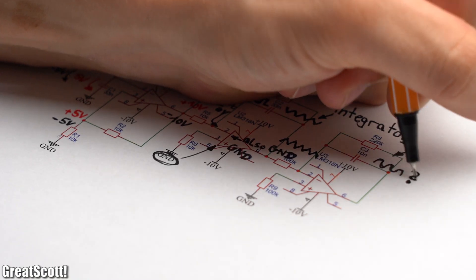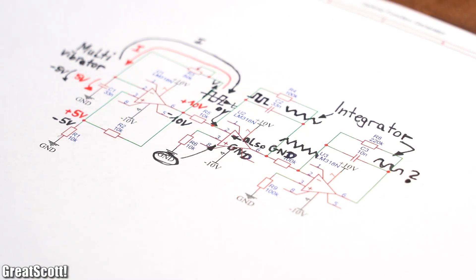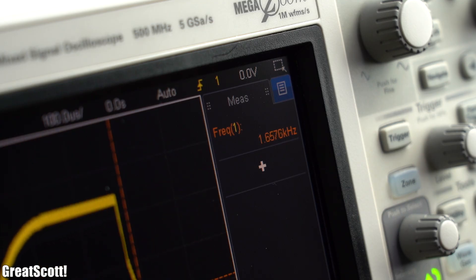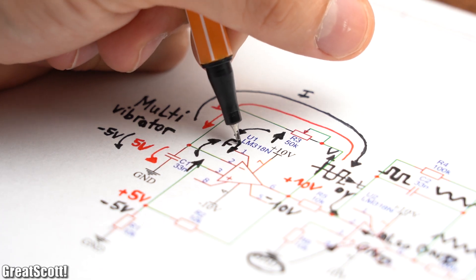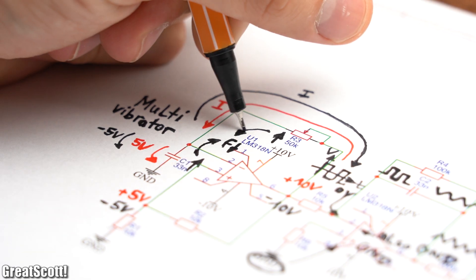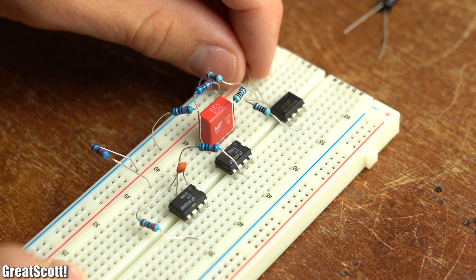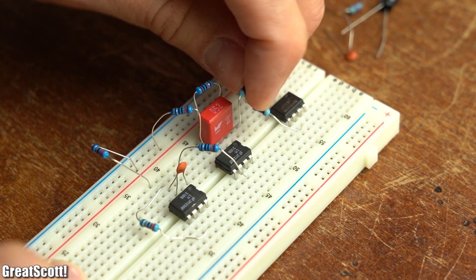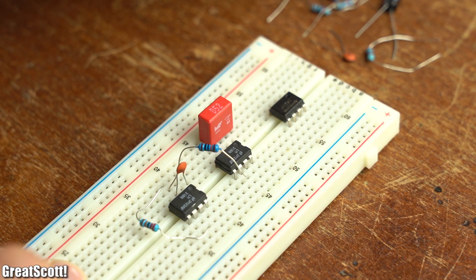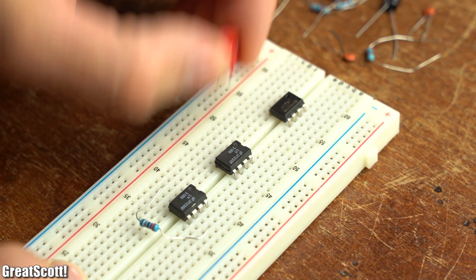In theory those op-amp circuits sound promising, but practically they do not deliver decent waveforms and also come with a minimum frequency, which means we would have to change passive components on the fly to alter the frequency range. That is a hassle though, which is why I would only recommend such op-amp circuits if you're looking for one specific waveform that you do not want to change.